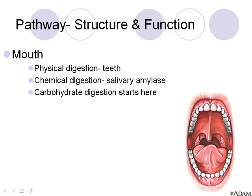Let's talk about the mouth first. There are a couple types of digestion that can happen here. The first is physical digestion — no enzymes involved. This is just the breakdown and grinding of food by our teeth, breaking it into smaller pieces for a larger surface area, which helps facilitate chemical digestion.